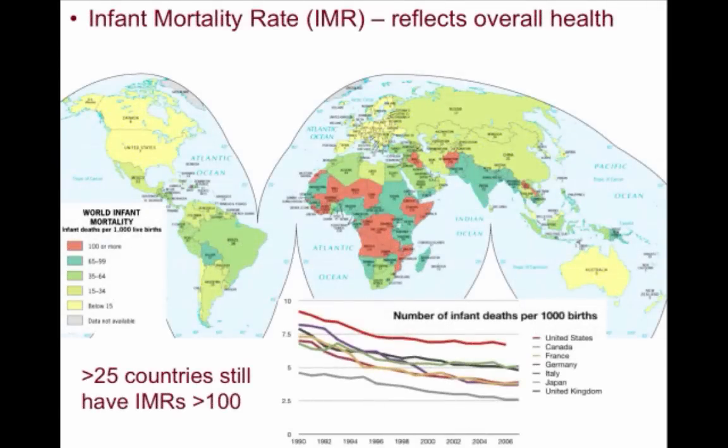Infant Mortality Rate, or IMR, is a figure that describes the number of babies that die within the first year of their lives in a given population. It is an indicator that reflects the overall health of a state or region. There are more than 20 countries that still have IMRs of greater than 100, or more than one death among every 10 newborns.